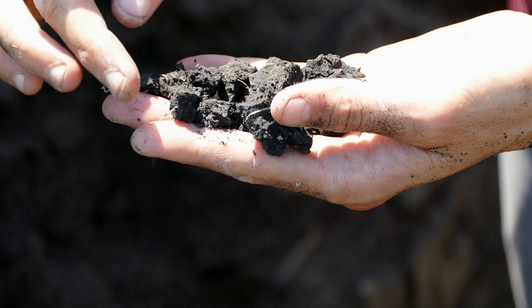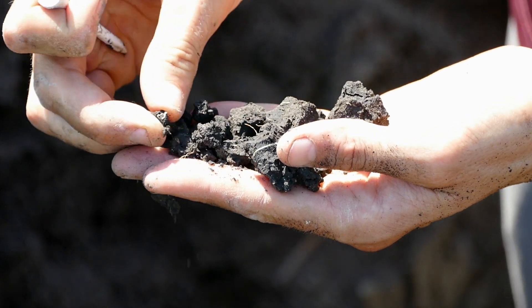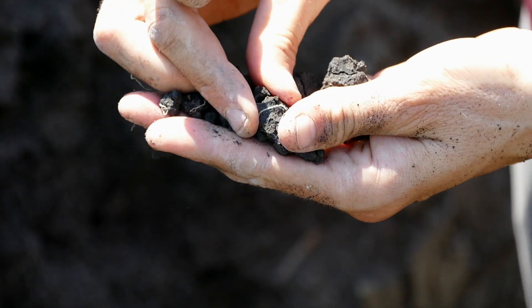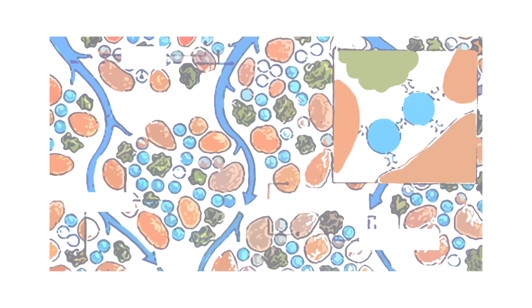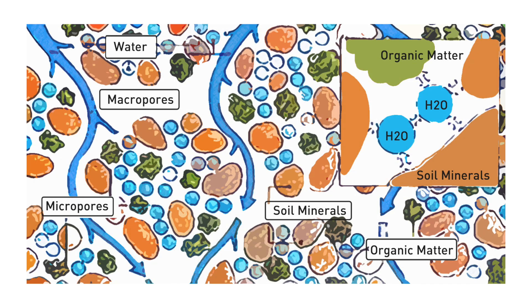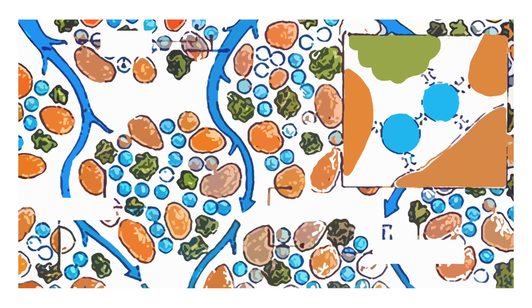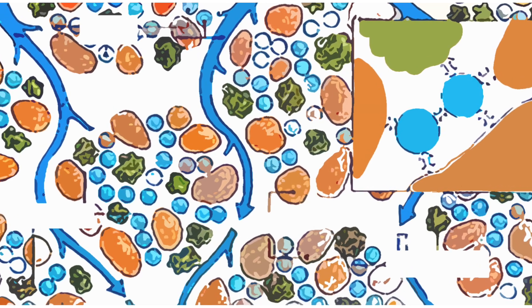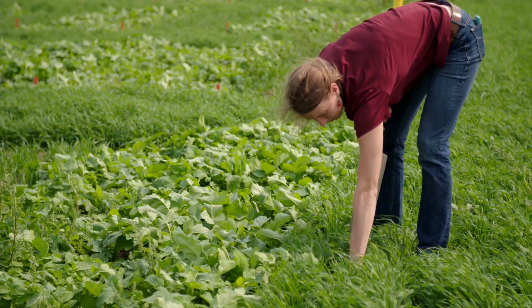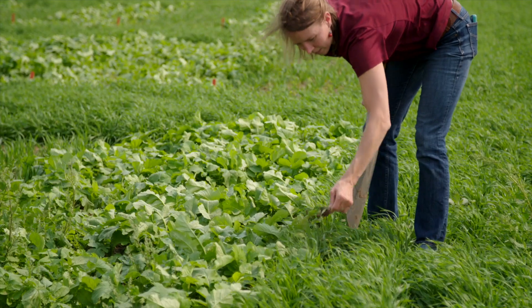Soil structure has to do with the spaces between particles where air and water move around the soil. Soil aggregates are critical for holding water in the soil for two reasons. First, a well-aggregated soil has large pores between aggregates to let water enter the soil profile. Second, small pores within aggregates hold water tightly enough to keep it around, but loosely enough for plant roots to access it. It's critical that soil both let water flow in and hold water for later.